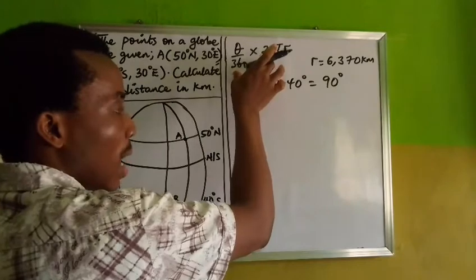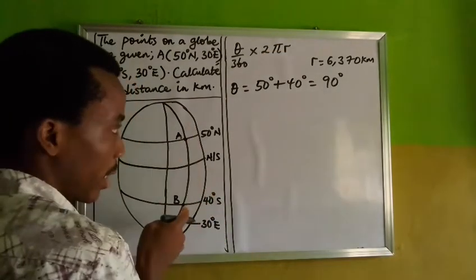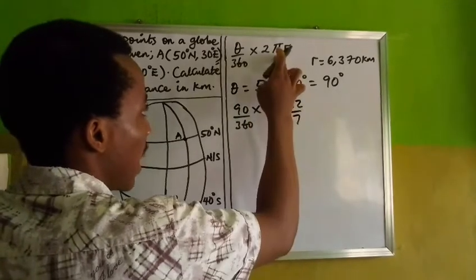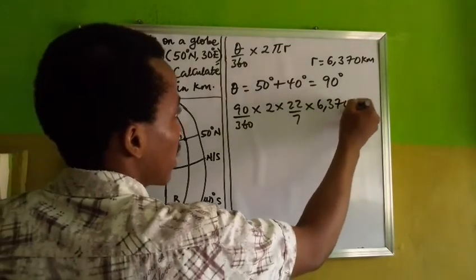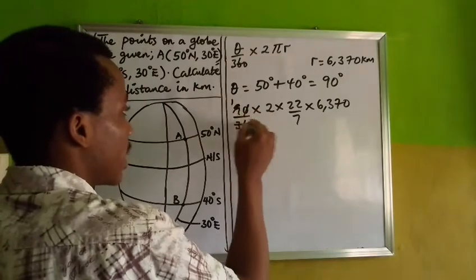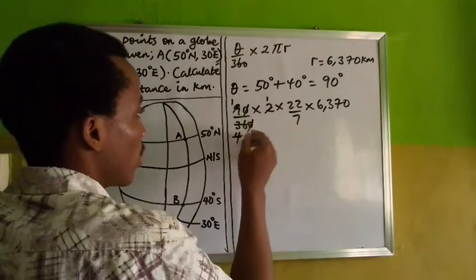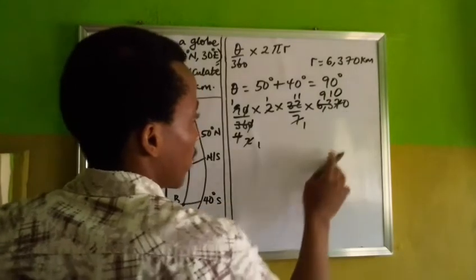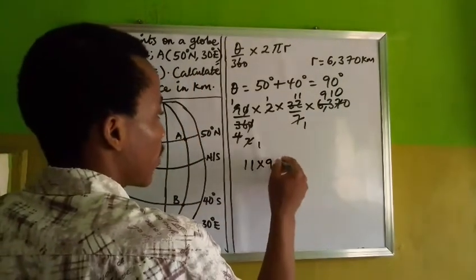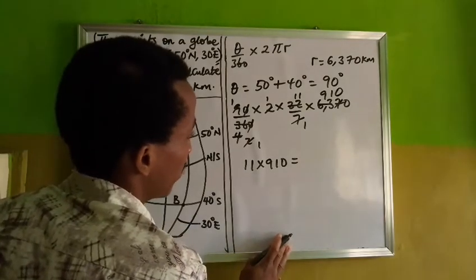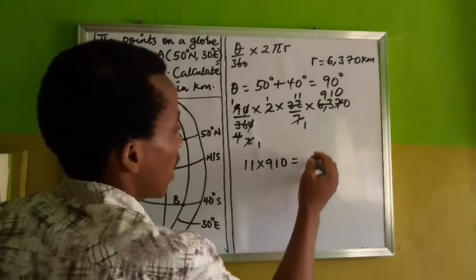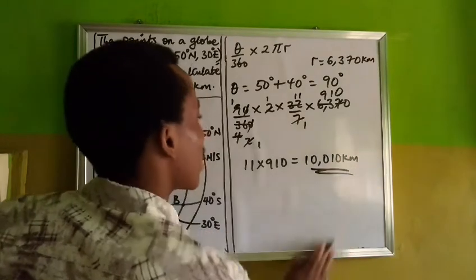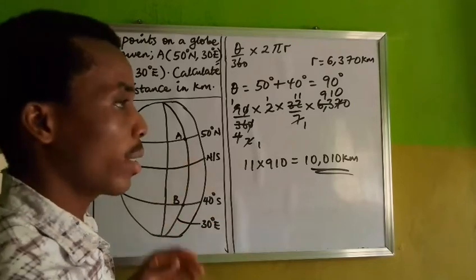Now let me plug it into the formula and calculate the distance, because I'm dealing with the great circle. That will be 90 over 360, times 2 times 22 over 7 (which is pi), times the radius 6,370. After simplification, the distance works out to 10,010 kilometers. So this is the distance between these points on the globe.